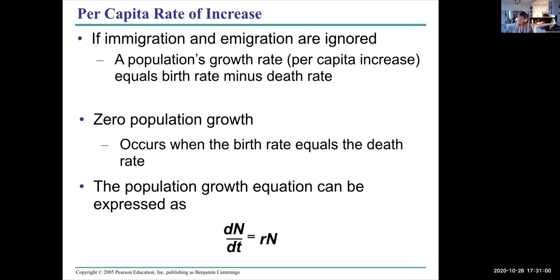That's a generalized equation. If we ignore immigration and emigration, then a population's growth rate equals the birth rate minus the death rate. That makes sense. If there's zero population growth, birth rate equals the death rate. This is the population growth equation.